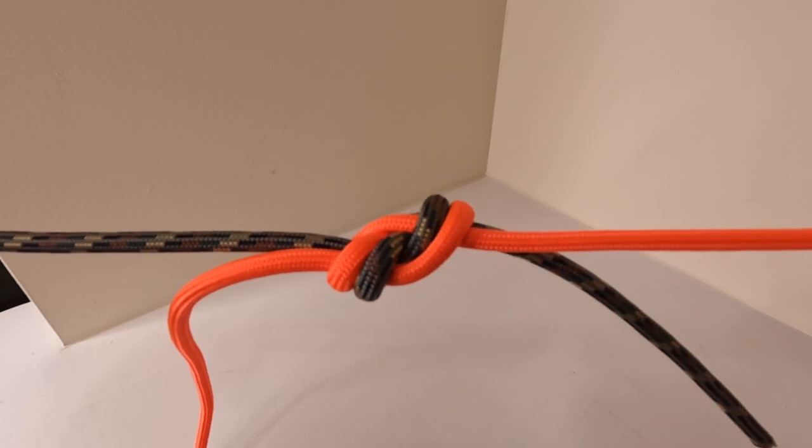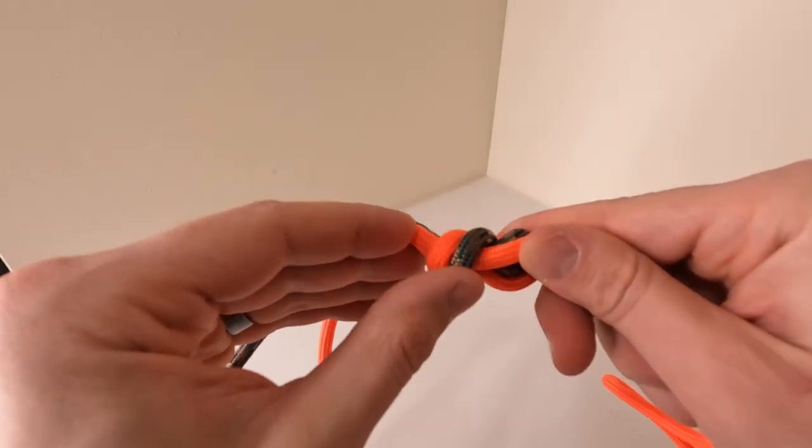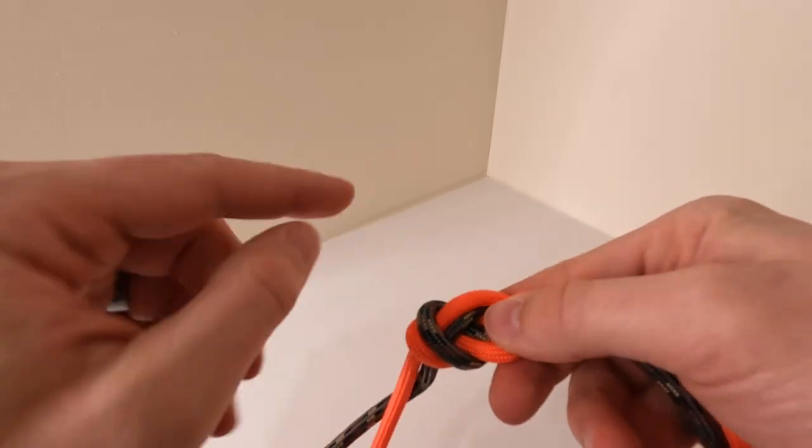Again this is one of the simplest and strongest bends that you can put together. It also happens to be one of the easiest to loosen. Simply apply pressure and the knot should come apart.